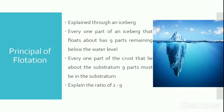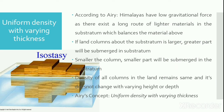We can explain the principle of floatation with the help of an iceberg. For every one part of the iceberg that floats above the water level, nine parts of the bulk remain below the level of water. Similarly, for every one part of the crust that lies above the substratum, nine parts of the crust must be in the substratum. Thus the law of floatation explains a ratio of 1 to 9. Applying this to Airy's concept, the Himalayas with a maximum height of 8848 meters should have a deeper root below the substratum approximately nine times that of 8848 meters.